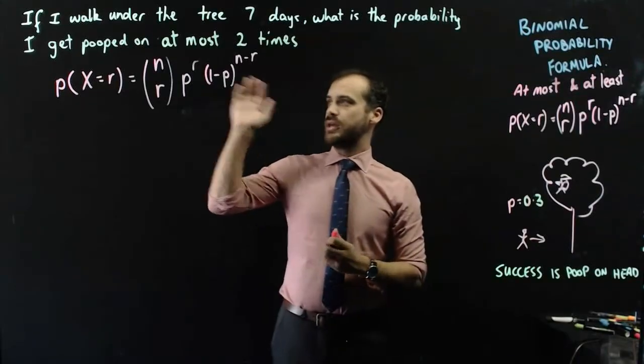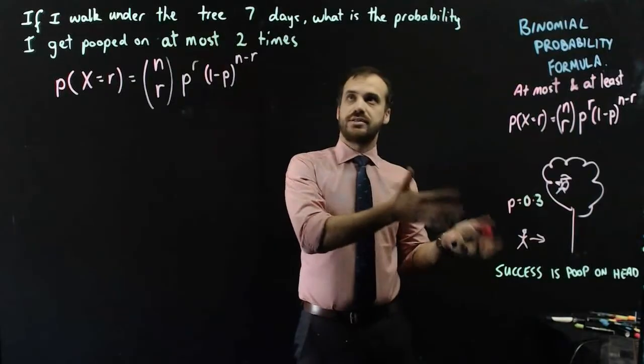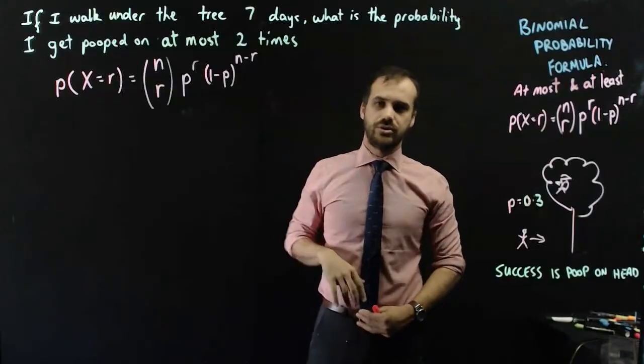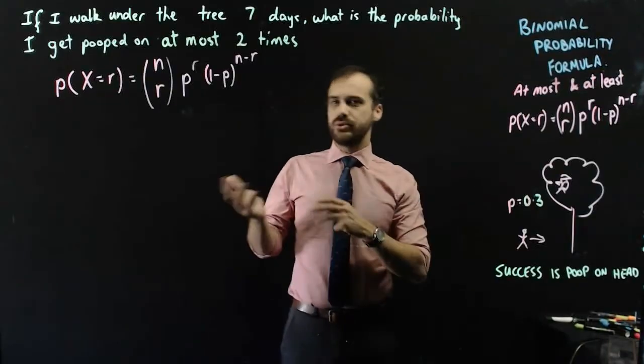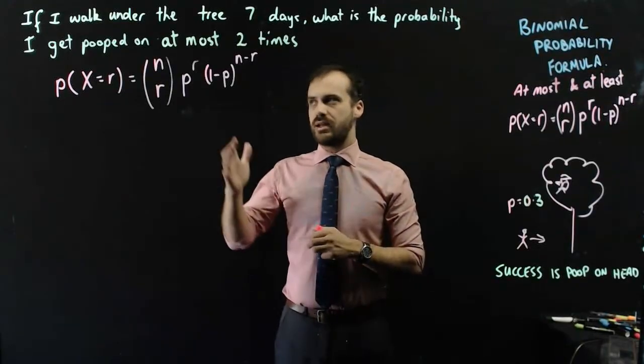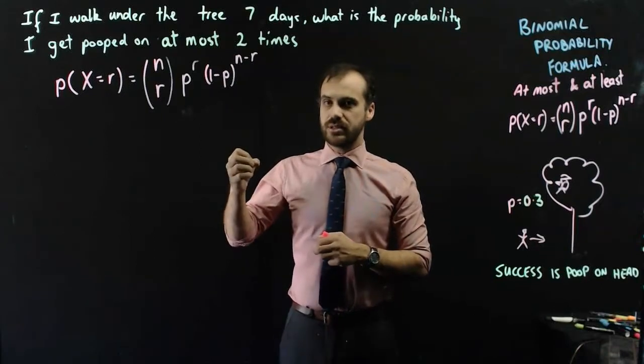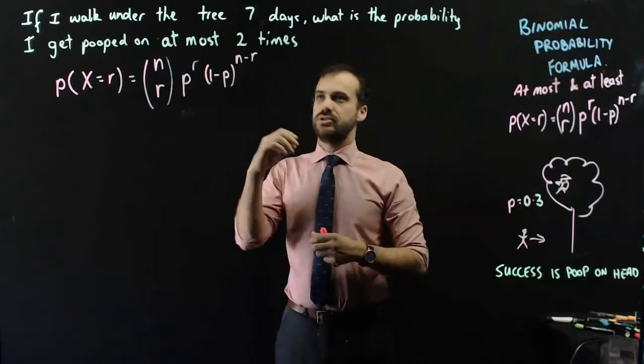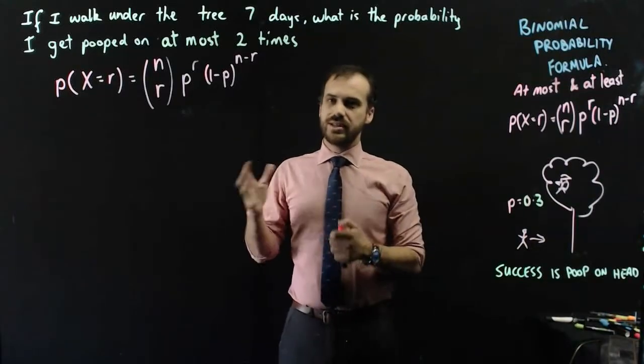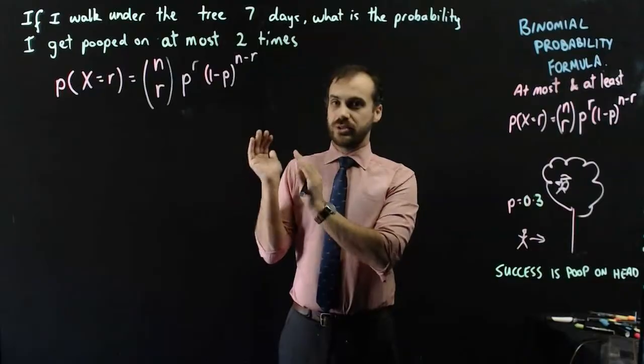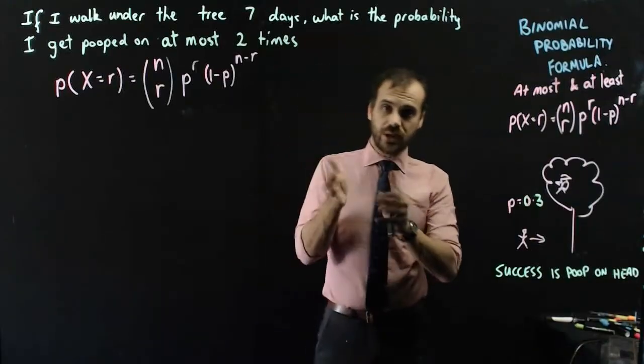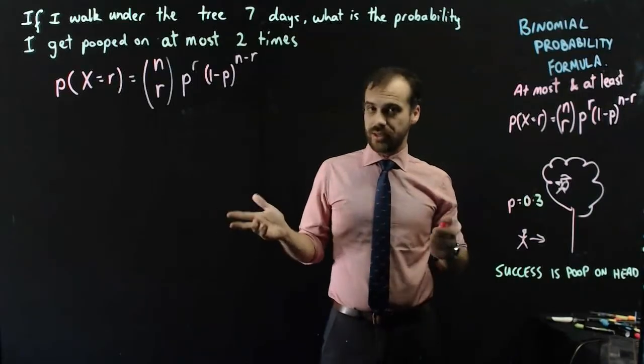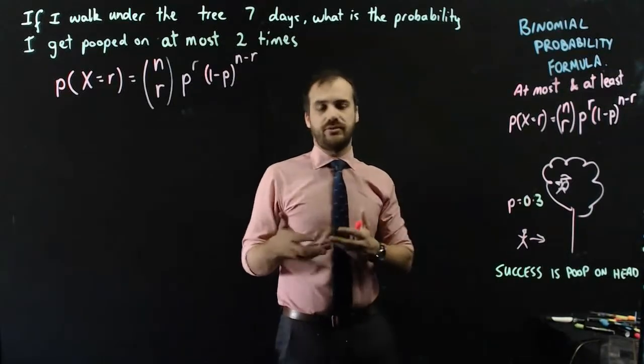Okay, so if I walk under that tree seven times, what is the probability I get pooped on at most two times? So what does at most mean? It means that 0 times is at most twice, 1 time is at most twice, and 2 times is at most twice. So I need to consider the probability that I get pooped on 0 times, the probability that I get pooped on once, the probability that I get pooped on twice, and add those probabilities together. This is a cumulative binomial.